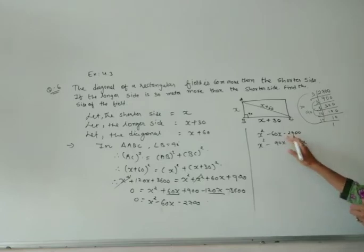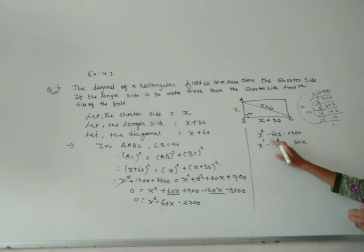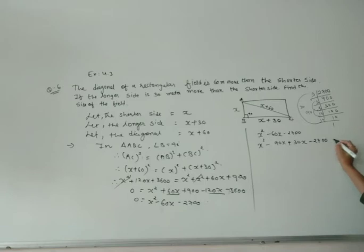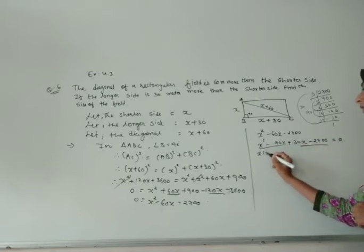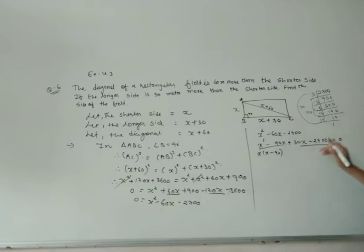While doing minus, we have to subtract and bring them. We will write the greater number's sign as minus and the smaller number's sign as plus: minus 2700, and that equals 0. Let us take common. Here will remain x minus 90.